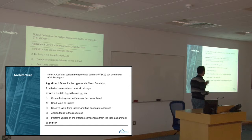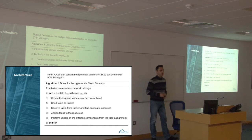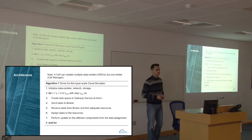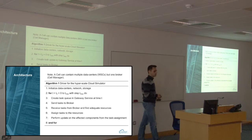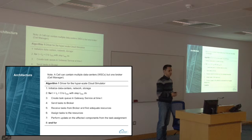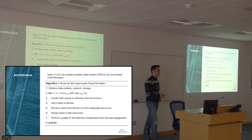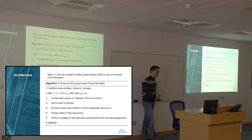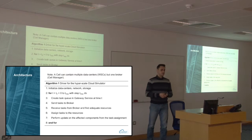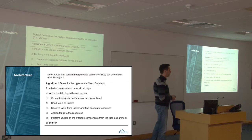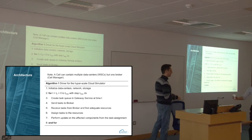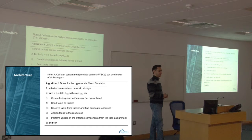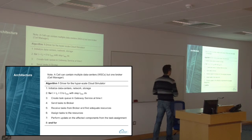Here you can see a generalized driver for our simulation. The first step is to initialize all parameters, then we have the time-advancing loop from 0 to a predefined maximum time, or when all tasks are allocated on the hardware. Then we create a task queue in the gateway service, send the tasks to the broker. The broker receives the tasks from the gateway service and assigns them to the hardware. Then we perform some updates on our statistics engine to get measurements, for example on the utilization of the hardware.